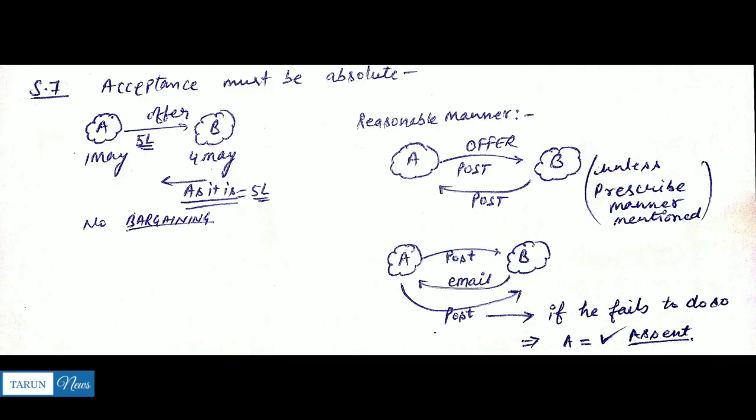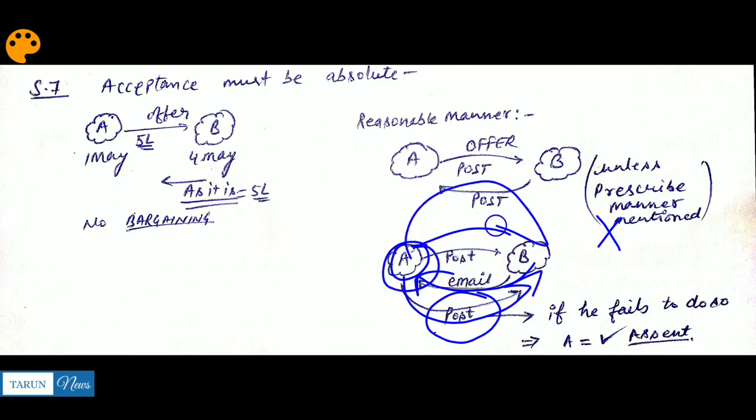Now what is A's duty here? Look, if A sent by post and B sent by email, but A doesn't tell B that 'you have to send your acceptance letter by post only, if you don't send by post, it won't be considered valid acceptance' - if A doesn't notify B that 'send by post', what does that mean? If A fails to do so, meaning if A doesn't tell B 'send by post, not email', that means A has accepted that 'okay, whatever you sent is fine'.